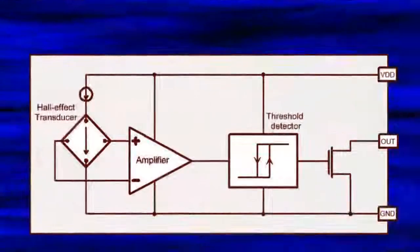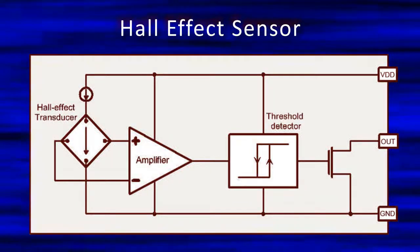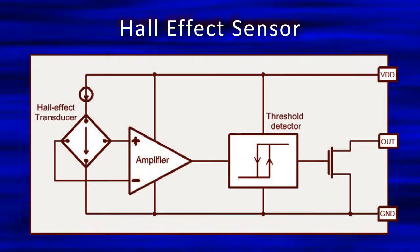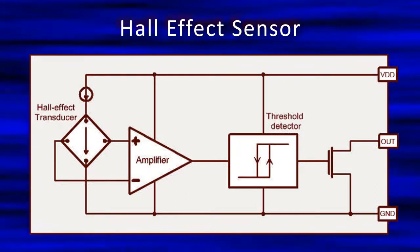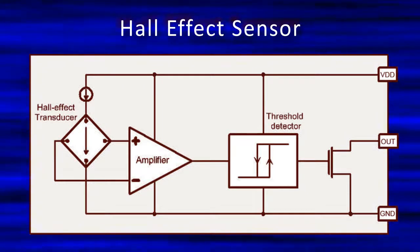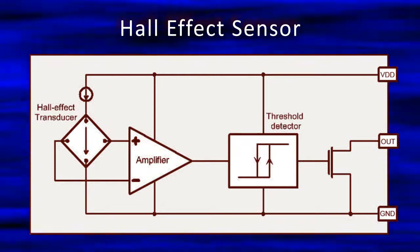Here's a block diagram of a typical digital Hall Effect sensor. In addition to bias and amplifier circuitry for the Hall Effect transducer, it also provides a threshold detector and an output driver, which is typically in the form of a MOSFET or bipolar transistor switched to ground. This open drain output, or open collector in the bipolar case, provides far more interfacing flexibility.